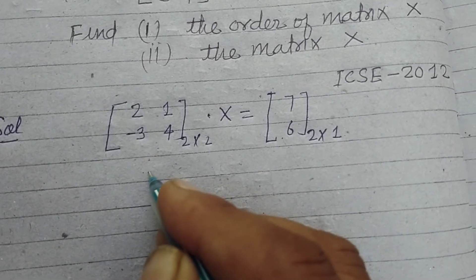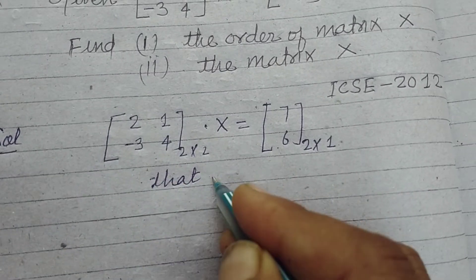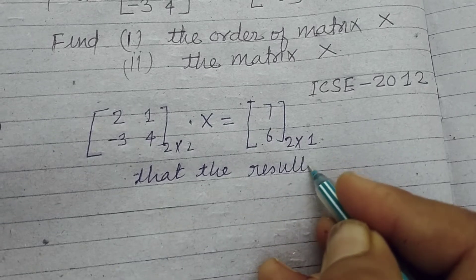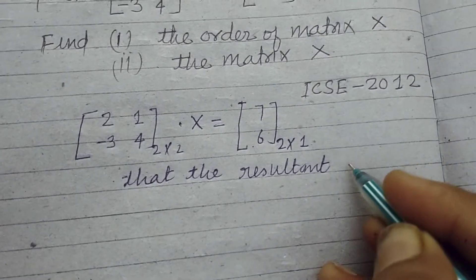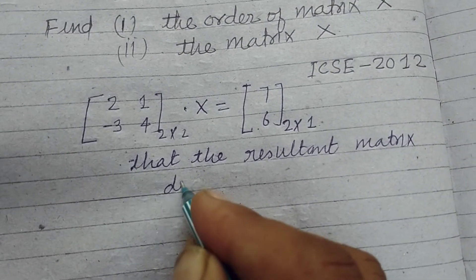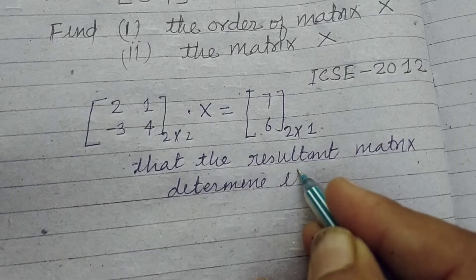So students, always learn that the resultant matrix determines the order of the unknown matrix.